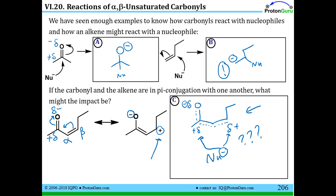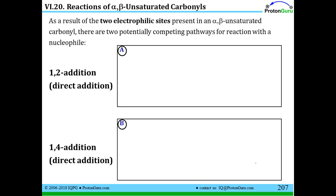This should remind you of our previous discussion in section four when we did addition to conjugated dienes, where we had two potential sites for nucleophile attack. In those cases, we had to decide between making a kinetic or thermodynamic product — a 1,2 or 1,4 product. We're going to have a similar situation here.